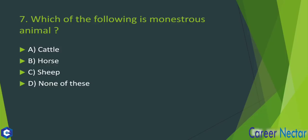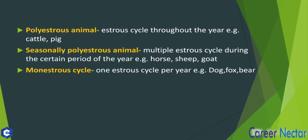Which of the following is a monoestrus animal? Let me define the terms. Polyestrus animals have an estrus cycle throughout the year — for example, cattle and pig. Seasonally polyestrus animals have an estrus cycle only during a certain period of the year — for example, horse, sheep, and goat. Monoestrus animals have only one estrus cycle per year.